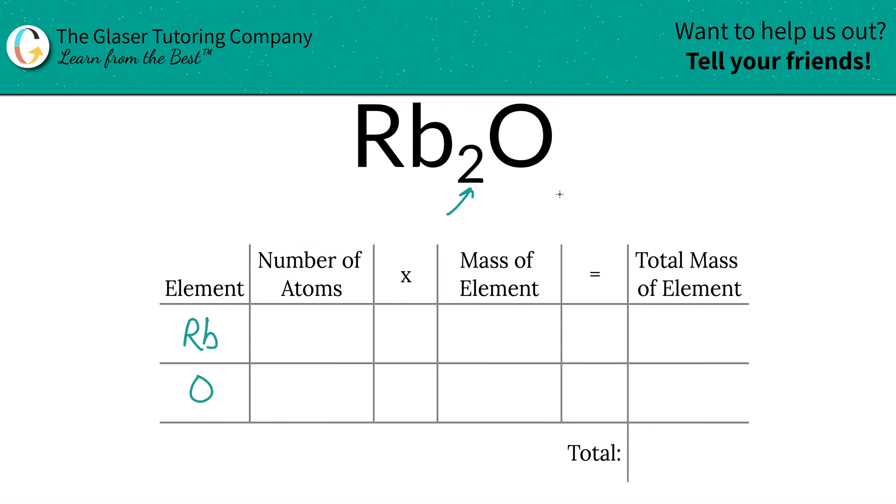Next is to write down the number of atoms of each, and that's where the subscripts come into play. If there is no subscript at the bottom, just simply write in a 1. So we've got two rubidiums, one oxygen.